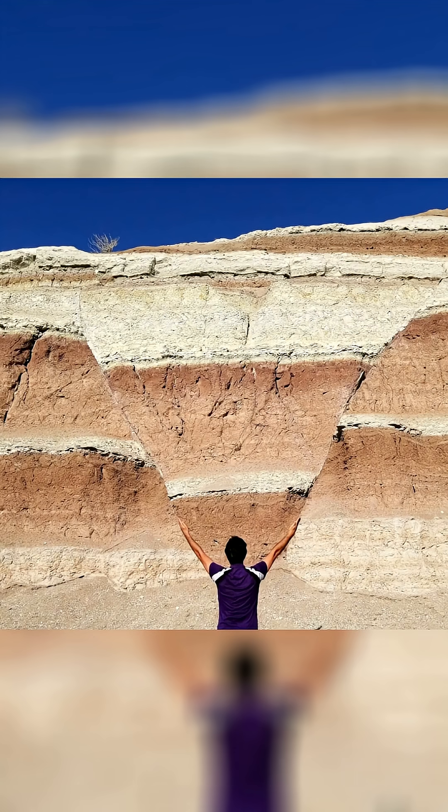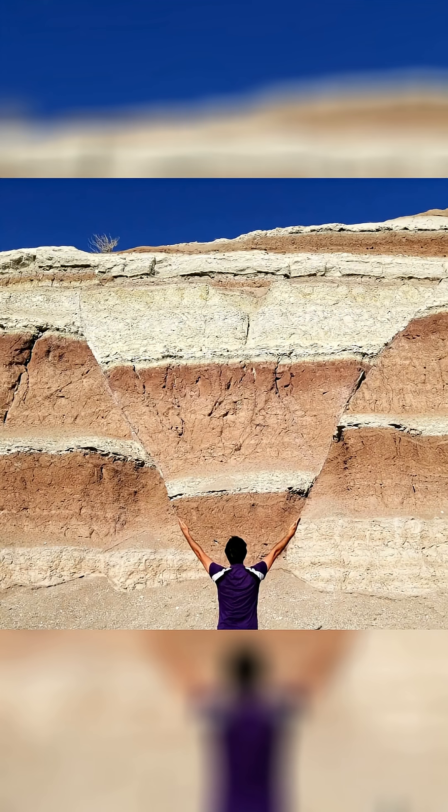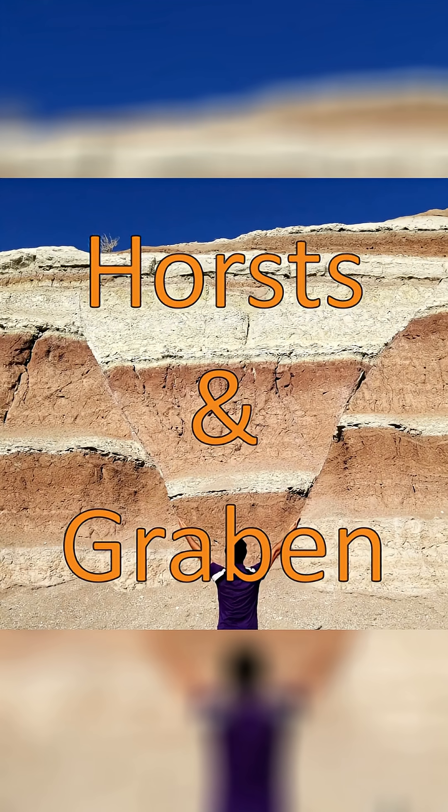This is a geologic feature found in Iran, specifically in the Aladaglar, or colorful mountains of Iran, and it is a perfect example of how normal faulting can create features known as horsts and grabens.